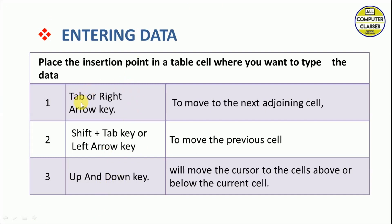You can navigate between cells using three methods. Use Tab or the Right Arrow key to move to the next adjoining cell. Use Shift+Tab or the Left Arrow key to move to the previous cell. Use the Up and Down Arrow keys to move to the cells above or below the current cell.